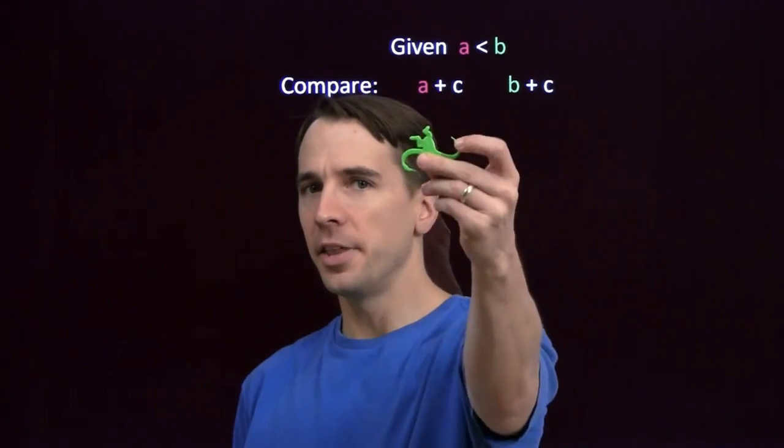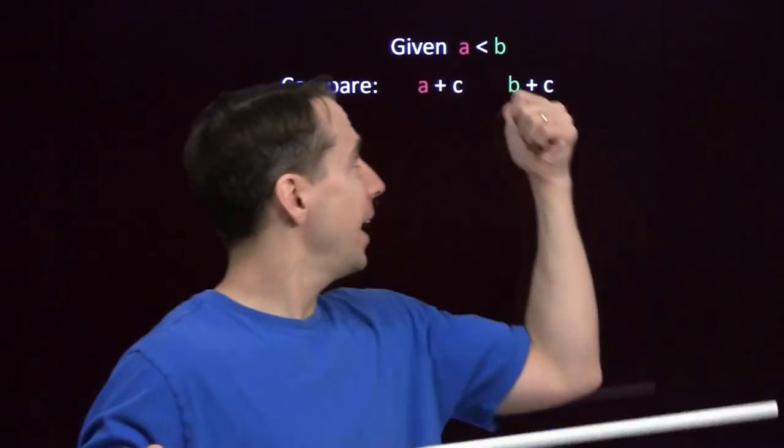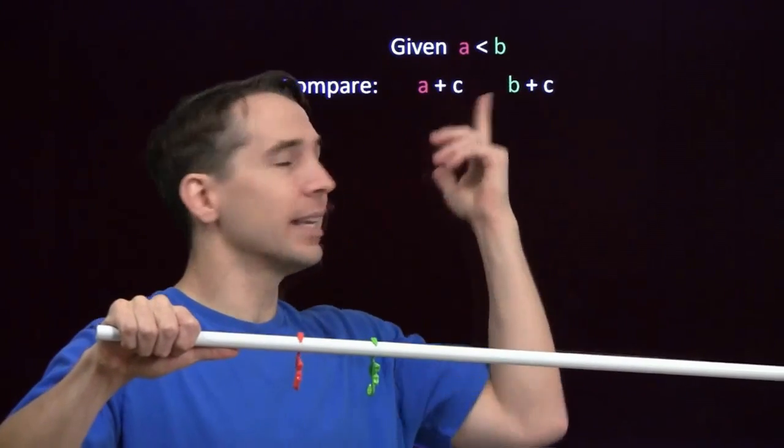There's a, there's b. Here's my number line. a is less than b. All that means is that monkey a is to the left of monkey b on the number line. That's all a less than b means.